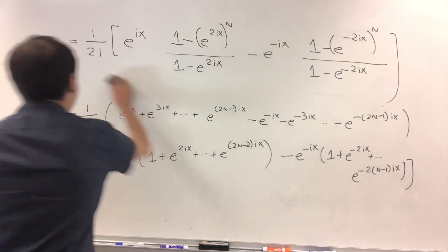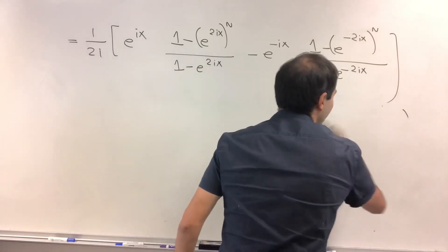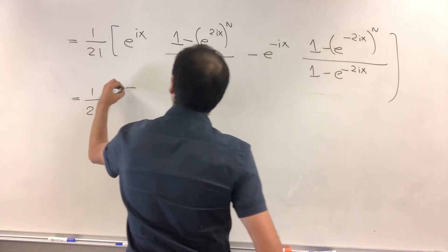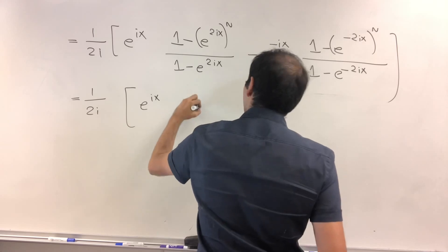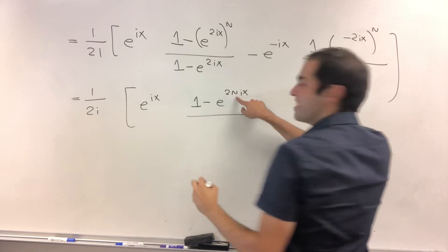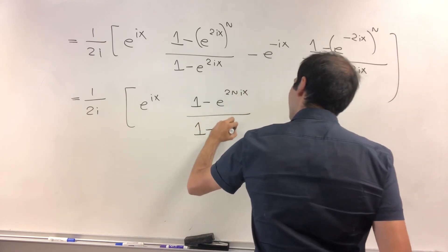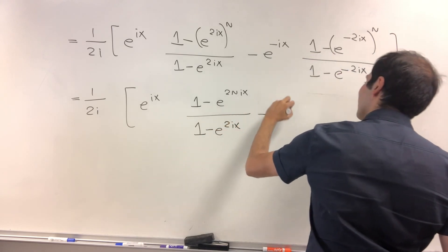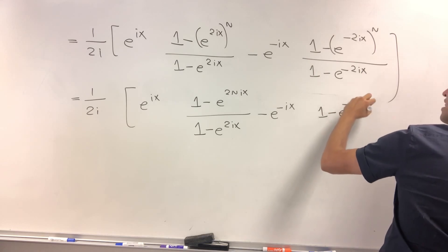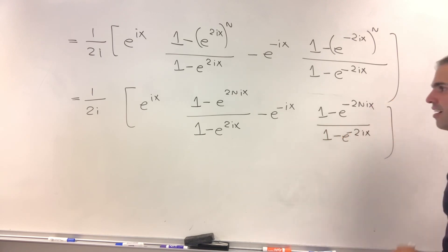Which now you can just simplify. And again, the beautiful thing is this looks pretty complex, but it simplifies quite nicely if you think in terms of trig. So 1 over 2i, e to the ix, alright, 1 minus e to the 2n ix, next geht here, if you speak German. 1 minus e to the 2ix, and then minus e to the minus ix, so 1 minus e to the minus 2n ix over 1 minus e to the minus 2ix.